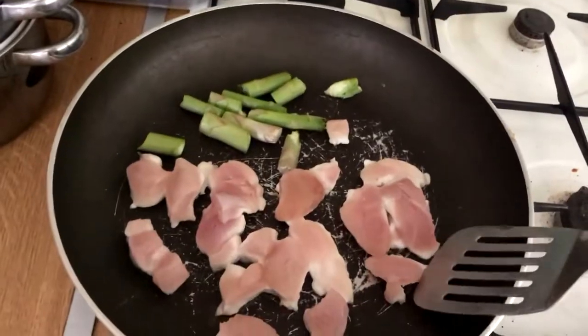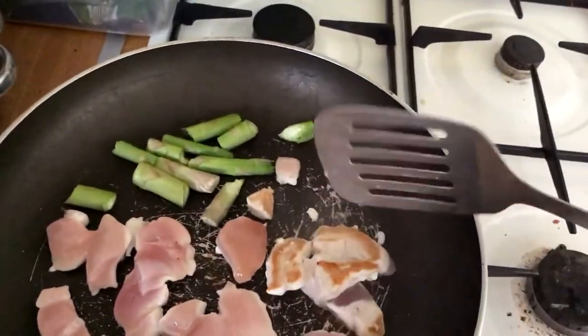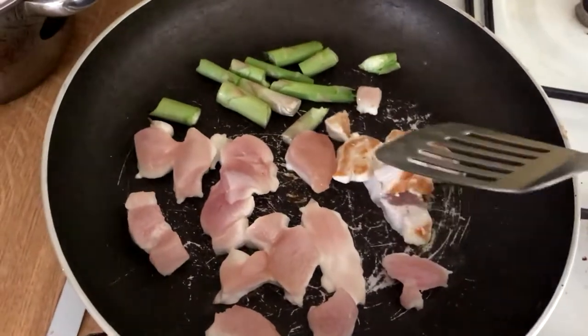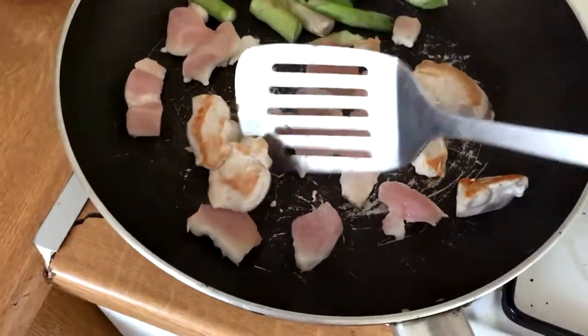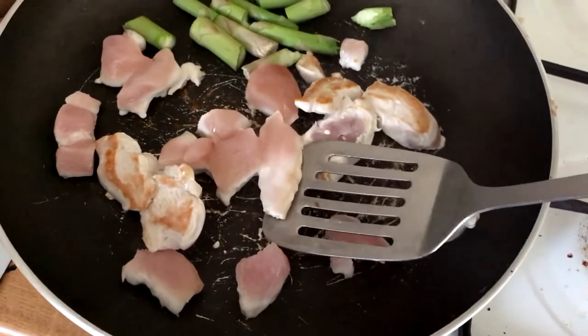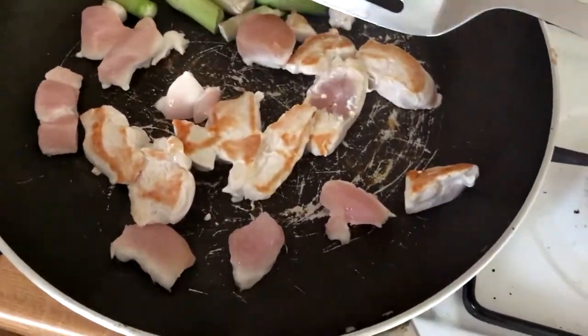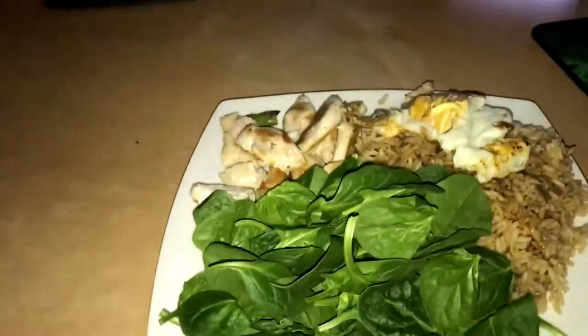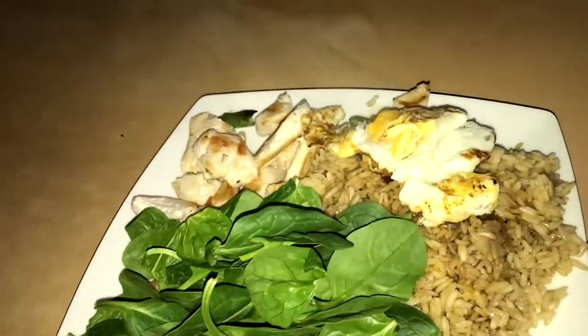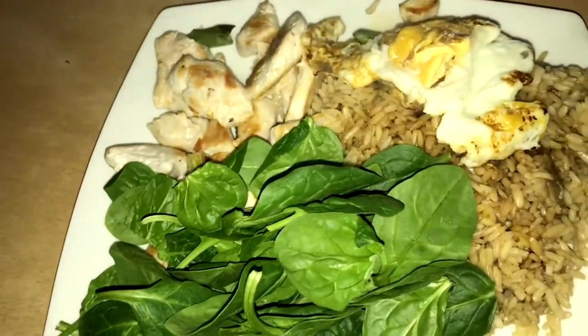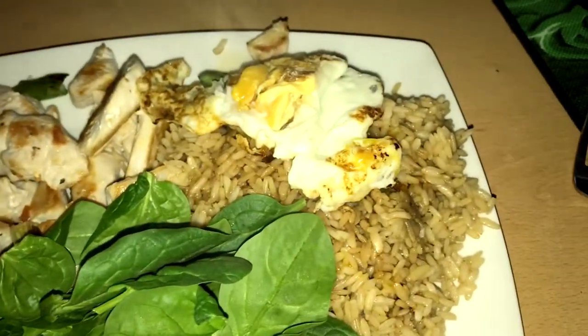Okay, had some chocolate earlier. No avocado, had enough fat. So chicken breast, three sticks of asparagus, spinach, egg and brown rice. And then it's off to the physio. Since I've got an hour to be there, I thought I might as well eat now and then go straight to the gym after physio.